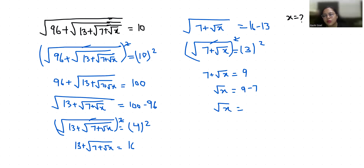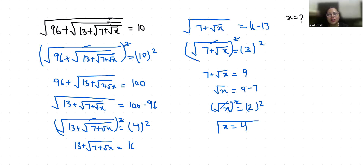With the help of squaring, the square root removes and x is equals to 4. I hope it's clear and you find it useful. So please give us a thumbs up and do subscribe to my channel. Stay tuned for more upcoming videos. Thank you.